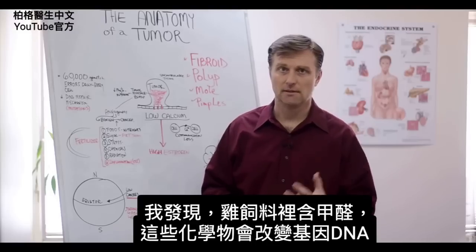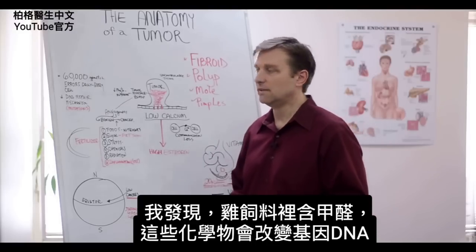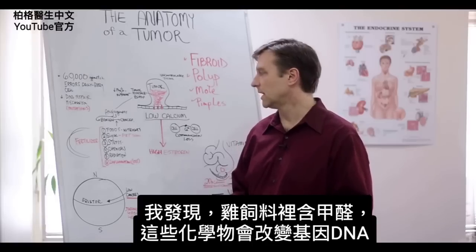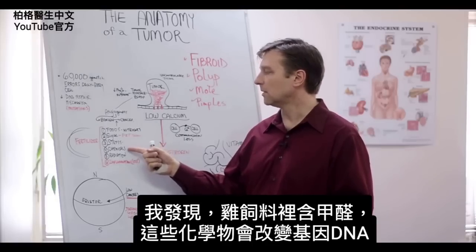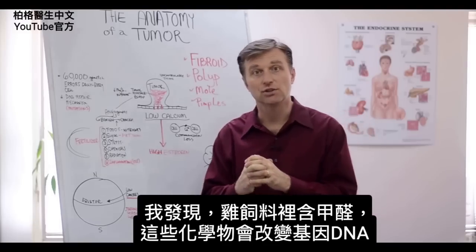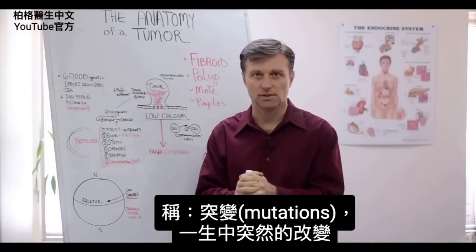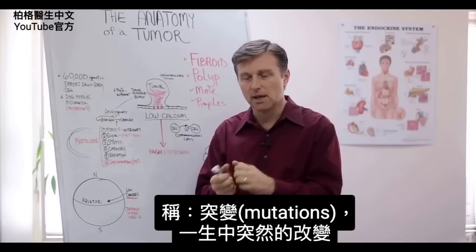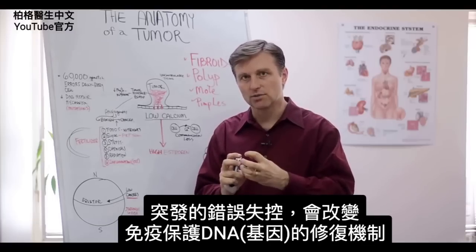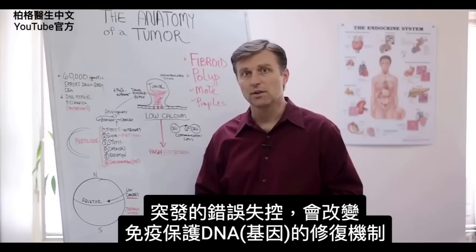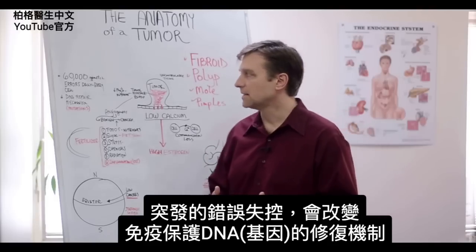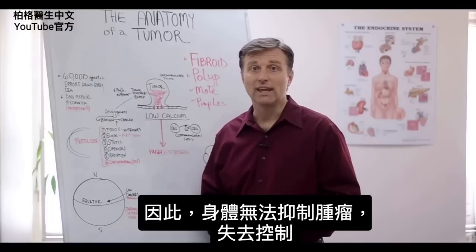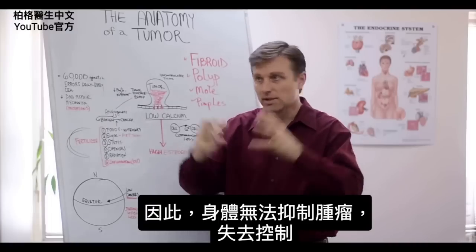I just found out that the binder fed to a lot of chickens contains formaldehyde. So what happens is these chemicals create alterations in your DNA — those are called mutations. Mutations are sudden changes within this lifetime, sudden errors that go out of control, and they can alter your immune protective DNA repair mechanism. So now we can't suppress the tumor anymore and it grows out of control.